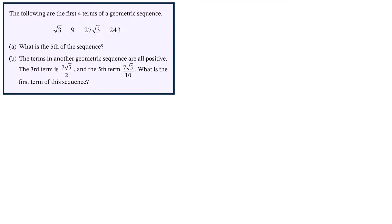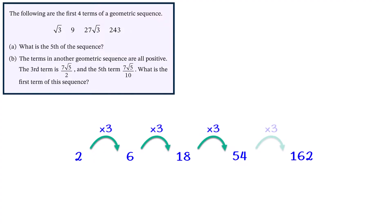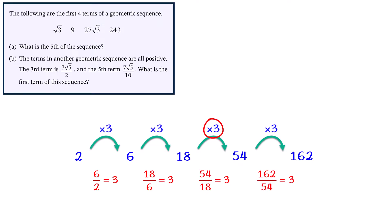For example, if we have the sequence 2, 6, 18, 54, and 162, then the common ratio is the number you multiply to go from one term to the next. In this example it's 3, because 2 times 3 is 6, 6 times 3 is 18, 18 times 3 is 54, and 54 times 3 is 162. The common ratio of 3 can be worked out by dividing one of the terms by the previous term: 6 divided by 2 is 3, 18 divided by 6 is 3, 54 divided by 18 is 3, and 162 divided by 54 is 3.